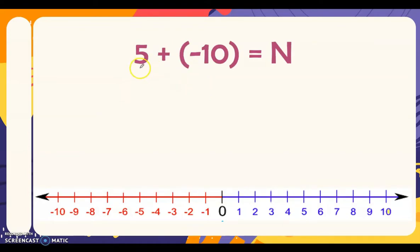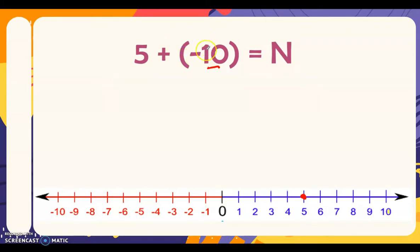Next, we have five plus negative ten equals n. Locate the first addend, which is five, on the number line. We add negative ten, so we need to move ten times to the left, since we are adding a negative number. If you add a positive number you go to the right; if you add a negative number you go to the left.